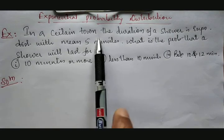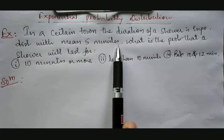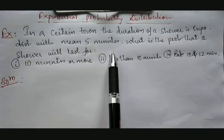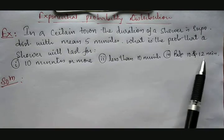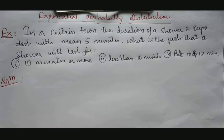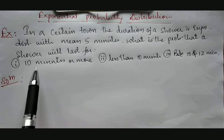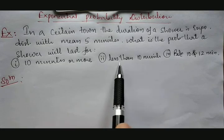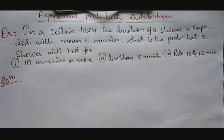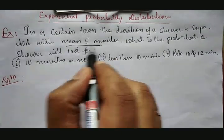In a certain town, the duration of a shower follows an exponential distribution with mean 5 minutes. What is the probability that a shower will last for: first, 10 minutes or more; second, less than 10 minutes; third, between 10 and 12 minutes. The average raining duration is 5 minutes, and we need to calculate the probability for each of these cases.